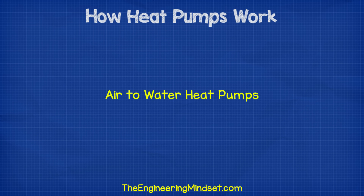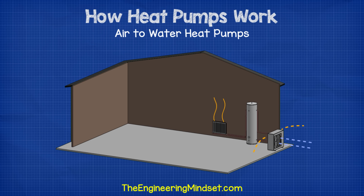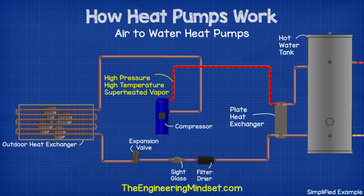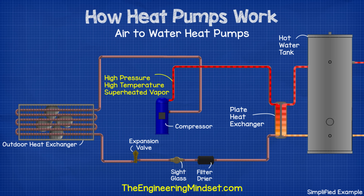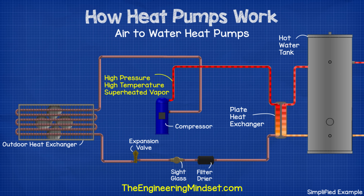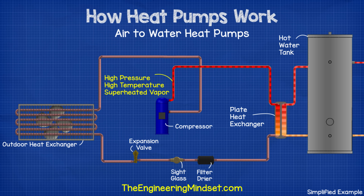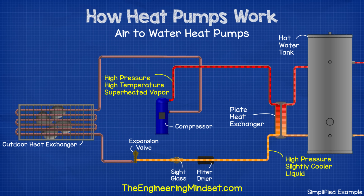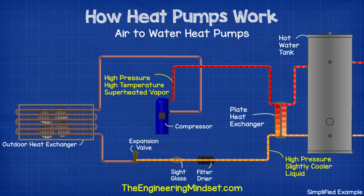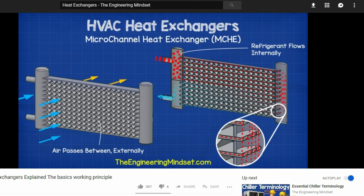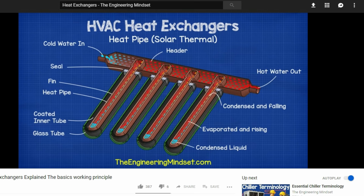Air to water heat pumps work in a very similar manner to air to air heat pumps, but without the reversing valve. The high pressure, high temperature vapor refrigerant leaves the compressor and heads into a plate heat exchanger. On the other side of the plate heat exchanger, water is being cycled through a hot water storage tank. Cool water enters the heat exchanger from the tank, and as it passes through, it absorbs heat from the hot refrigerant. The water then leaves at a much hotter temperature and flows back to the hot water storage tank to repeat the cycle. As the refrigerant gives up its heat to the water, it will condense, and it will leave the heat exchanger as a high pressure, lower temperature liquid. We've covered how heat exchangers work in our previous videos — links can be found in the video description below.